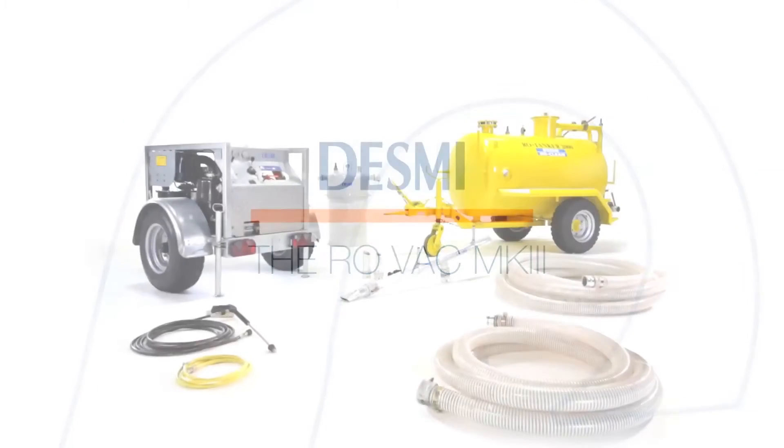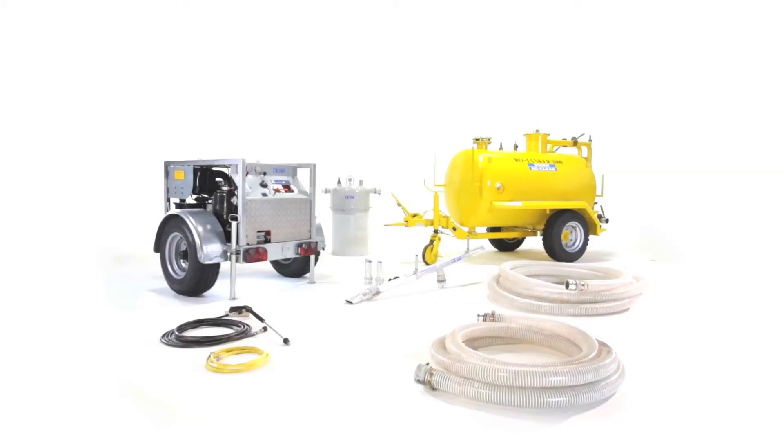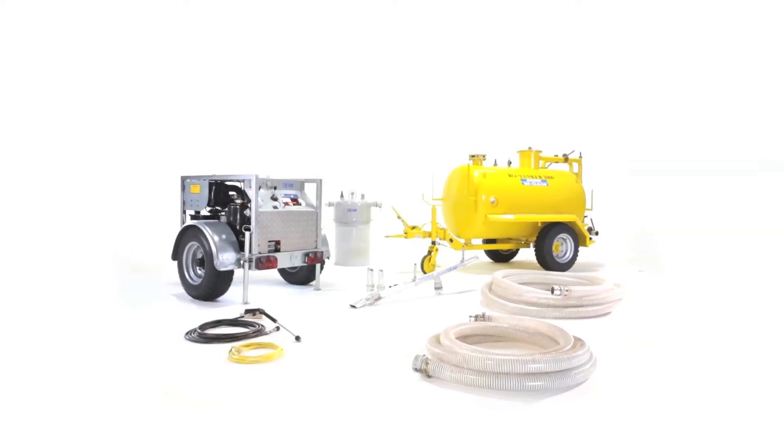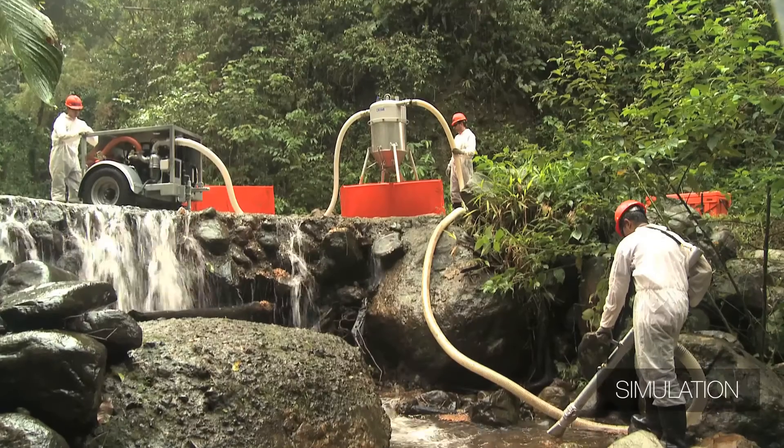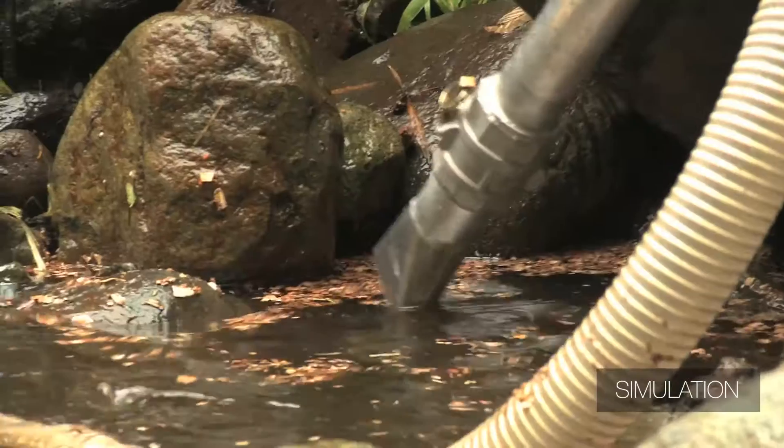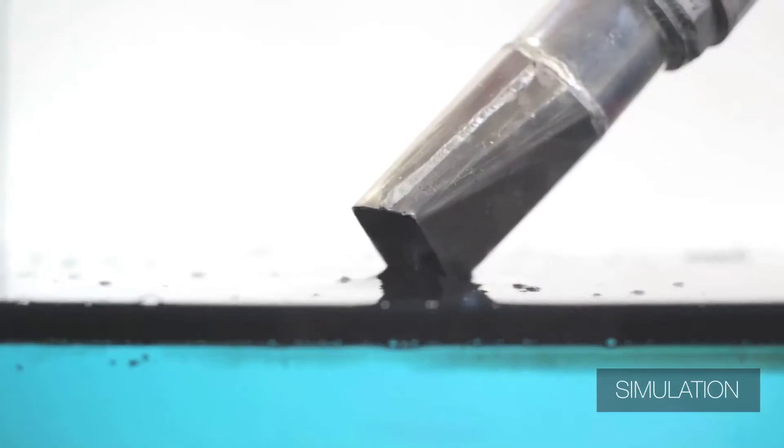The Rovac MK3 is a mobile vacuum skimmer system for quick recovery of most types of spilled oils, liquids, and sludge from water or ground surfaces.